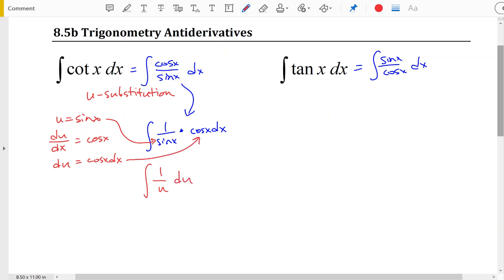And now we've rewritten it into the form of the antiderivative of 1 over u. And this is a rule that we have already learned. The antiderivative of 1 over u is the natural log of the absolute value of u. We don't want to leave it in terms of u, so the natural log of the absolute value of sine x plus c.